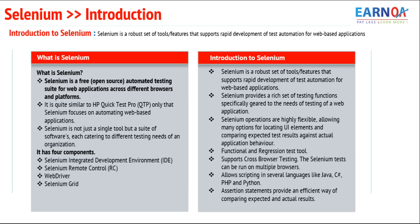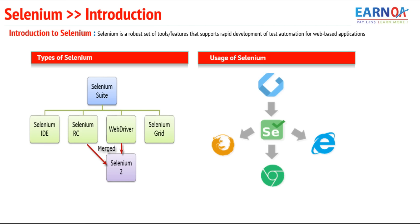Selenium can automate any web-based application and supports different browsers — IE, Chrome, Firefox, Safari, and Opera — and different operating systems like Windows XP, 7, 8, and 10. Today, Selenium WebDriver is the most famous version, known as Selenium 2, which is the combination of Selenium RC and the WebDriver. It is capable of running the same scripts on multiple browsers across multiple operating systems — that is the beauty of Selenium.